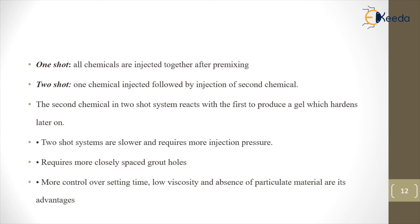When a one-shot system is used, all chemicals are mixed together and inserted simultaneously. In the two-shot system, one chemical is first inserted into the soil, and later the second chemical is inserted to react with the first one and form a gel-type mass. The second chemical then hardens in place.